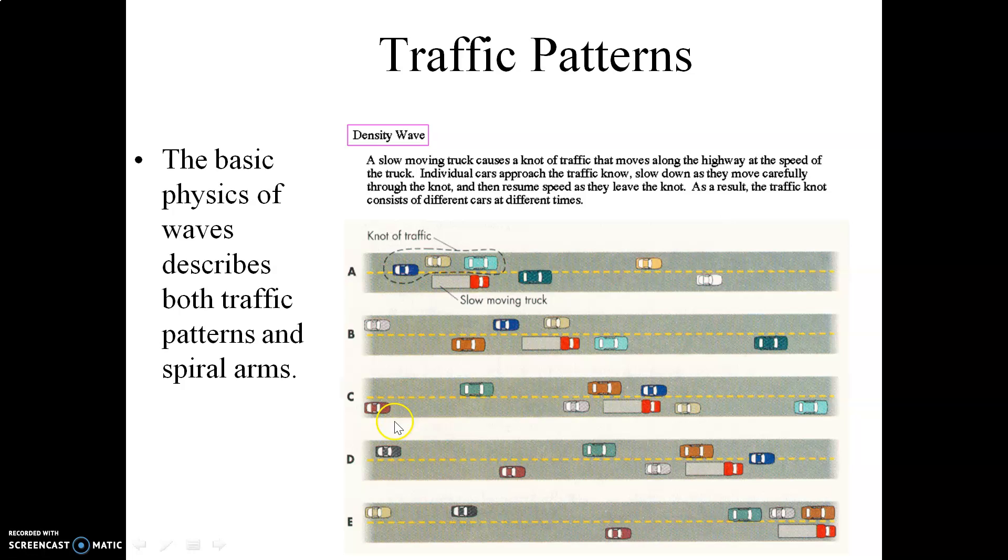So then an individual star, an individual car, for example, passes through that density wave and ends up over here like so from this portion of the picture to this picture here. So the basic physics of compression waves describes both traffic patterns and spiral arms. You've all experienced this before as you pass through traffic, heavy traffic, say, on the freeway.